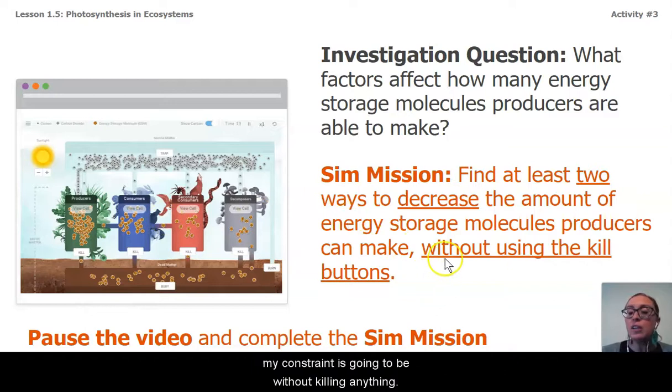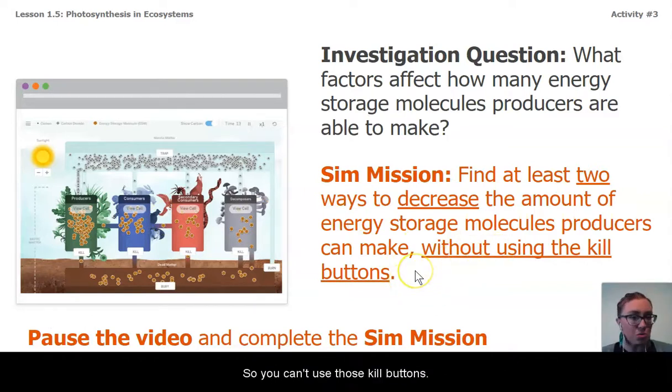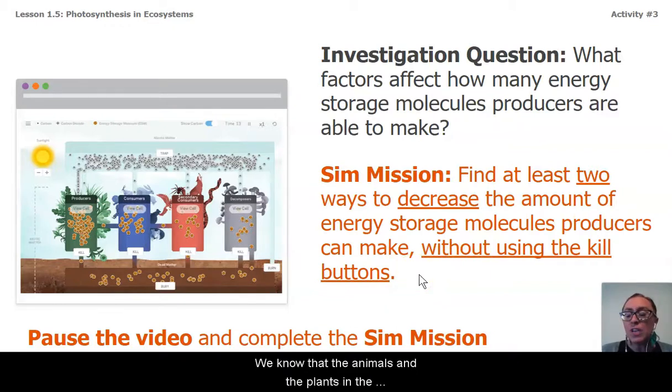The constraint is without killing anything. You can't use those kill buttons. We know that the animals and plants in the biodome were safely removed once the Econauts noticed they were having trouble growing and reproducing. So they didn't kill anything, and we won't kill anything in our sim either. We'll keep that same constraint.